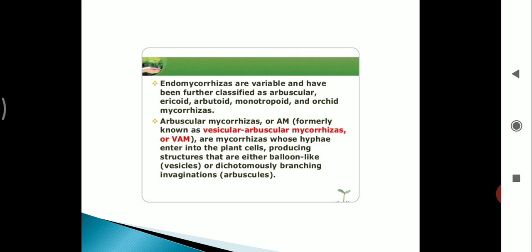Endomycorrhizae fungi penetrate the cell wall and invaginate the cell membrane. Endomycorrhizae are variable and have been further classified as arbuscular mycorrhizae, ericoid mycorrhizae, arbutoid mycorrhizae, monotropoid mycorrhizae, and orchid mycorrhizae. Arbuscular mycorrhizae or VAM whose hyphae enter into the plant cells producing structures that are either balloon-like structures called vesicles or dichotomously branched invaginations called arbuscules.